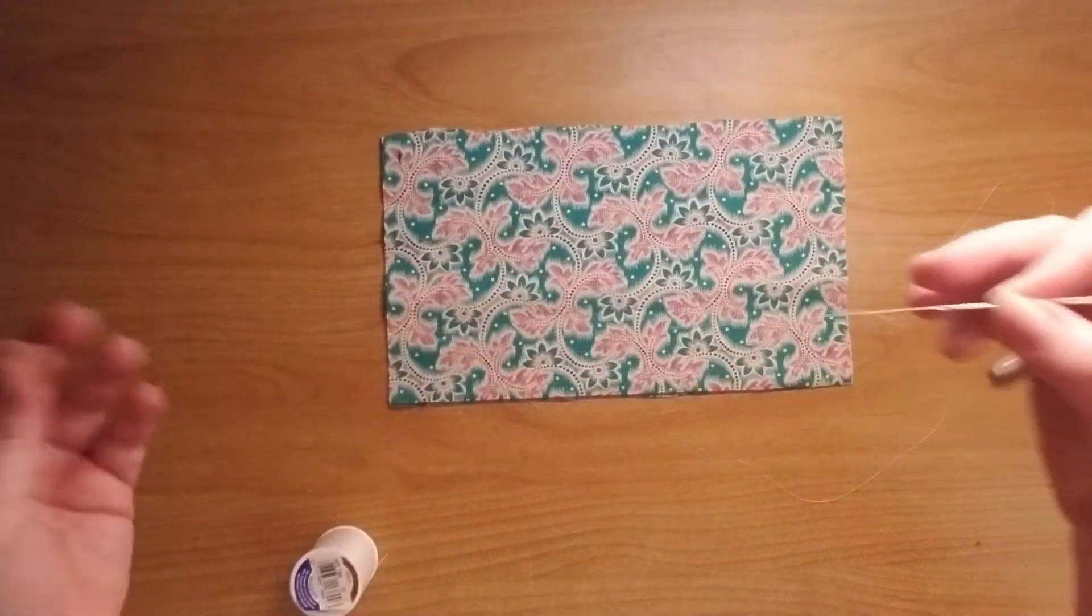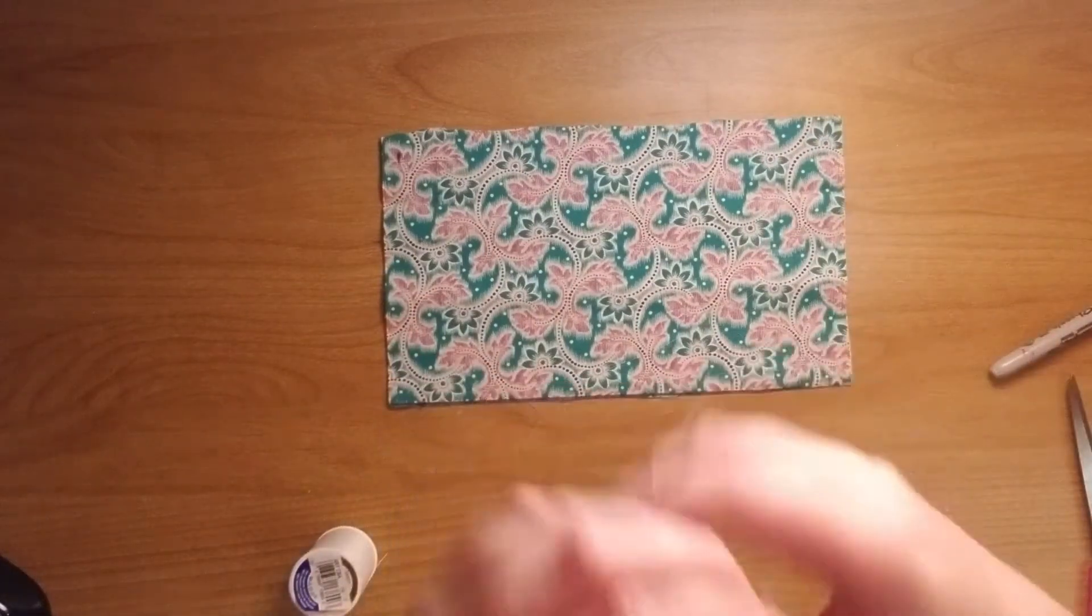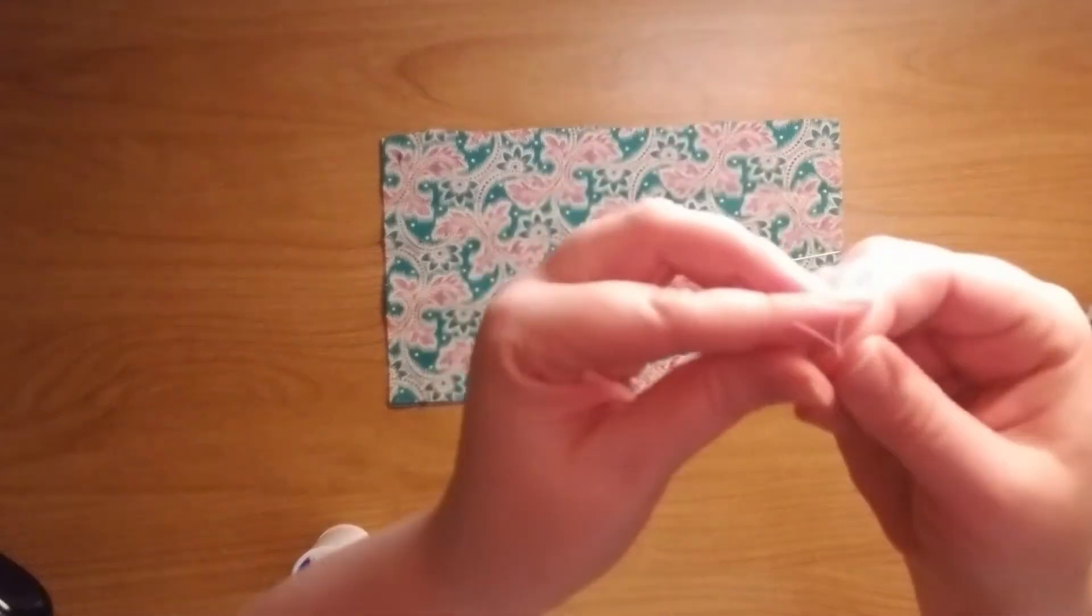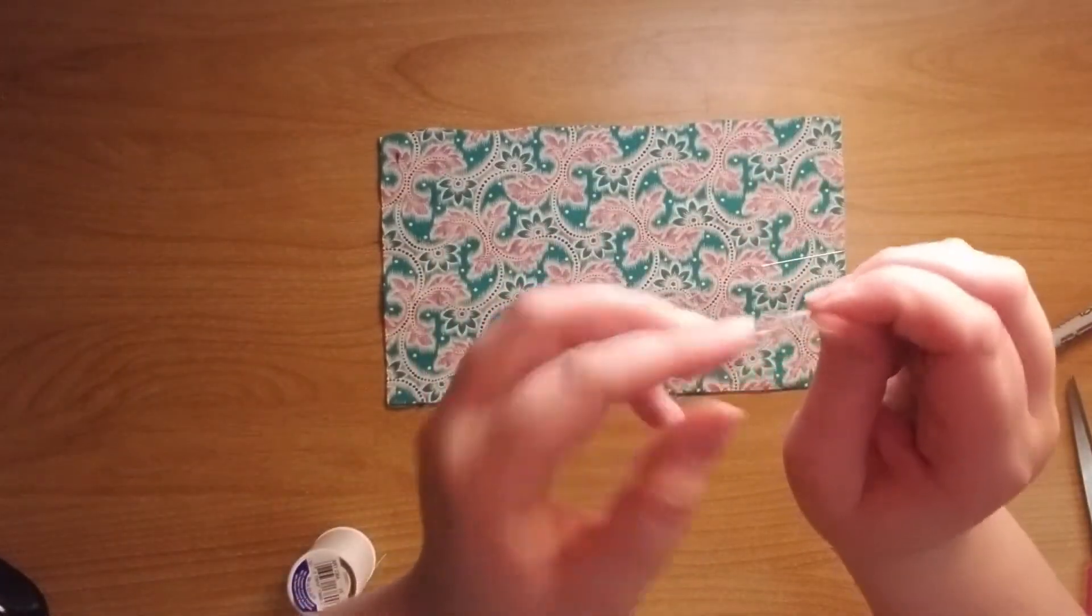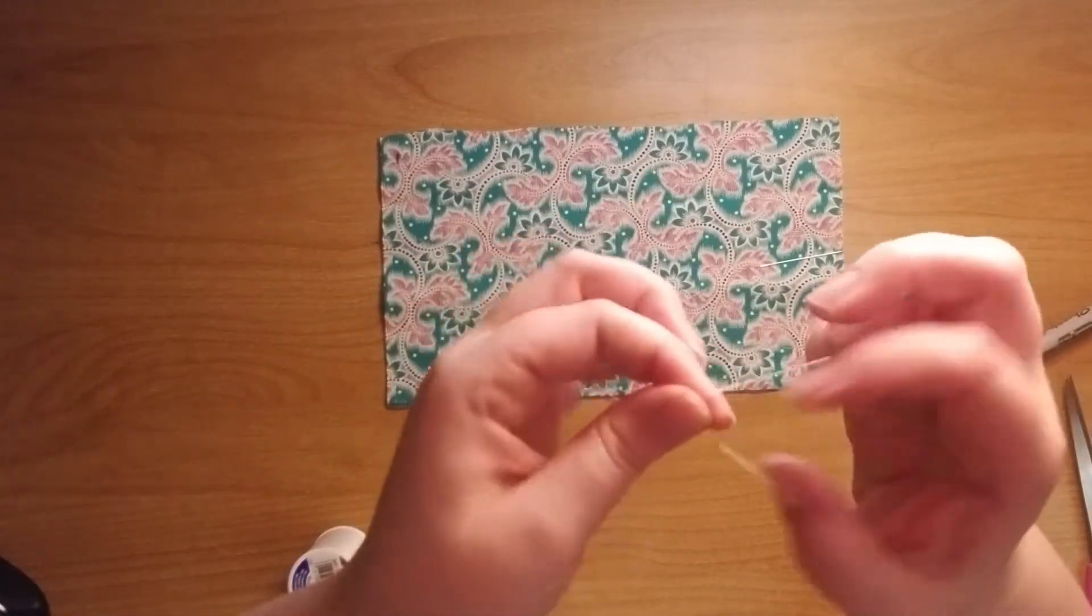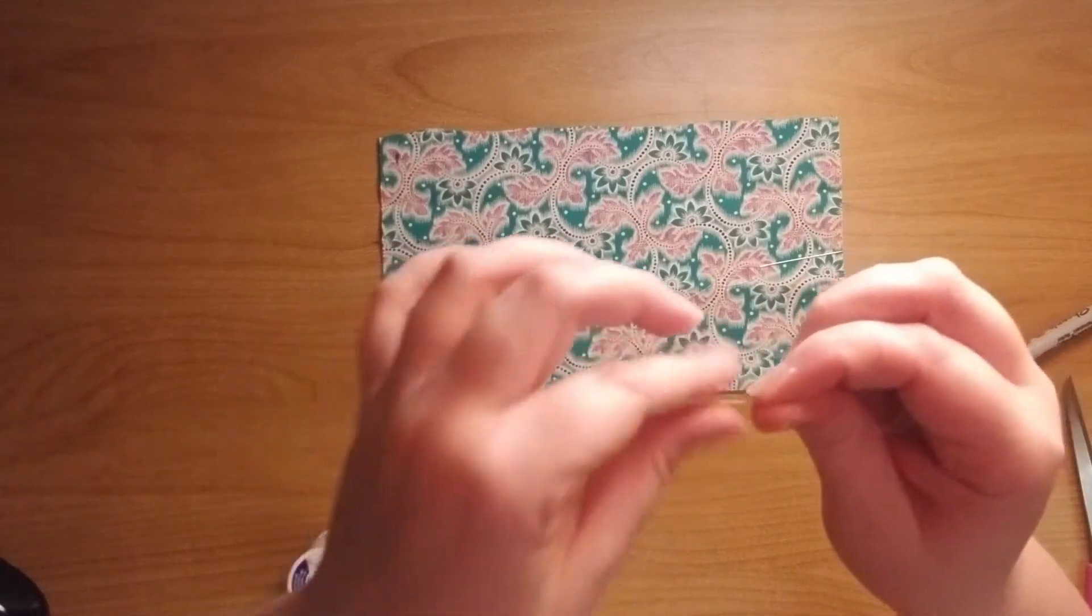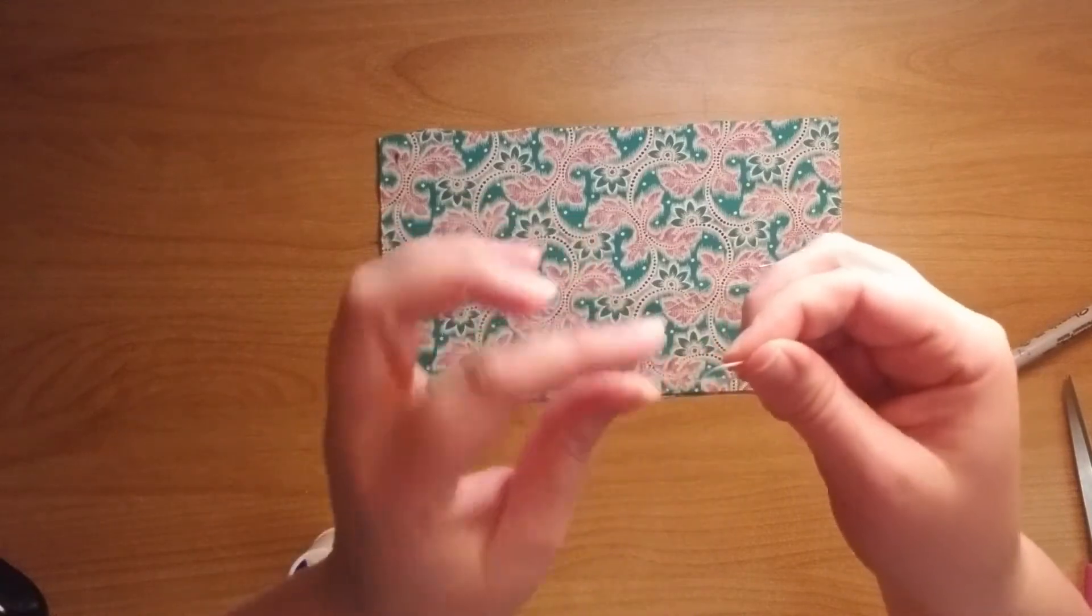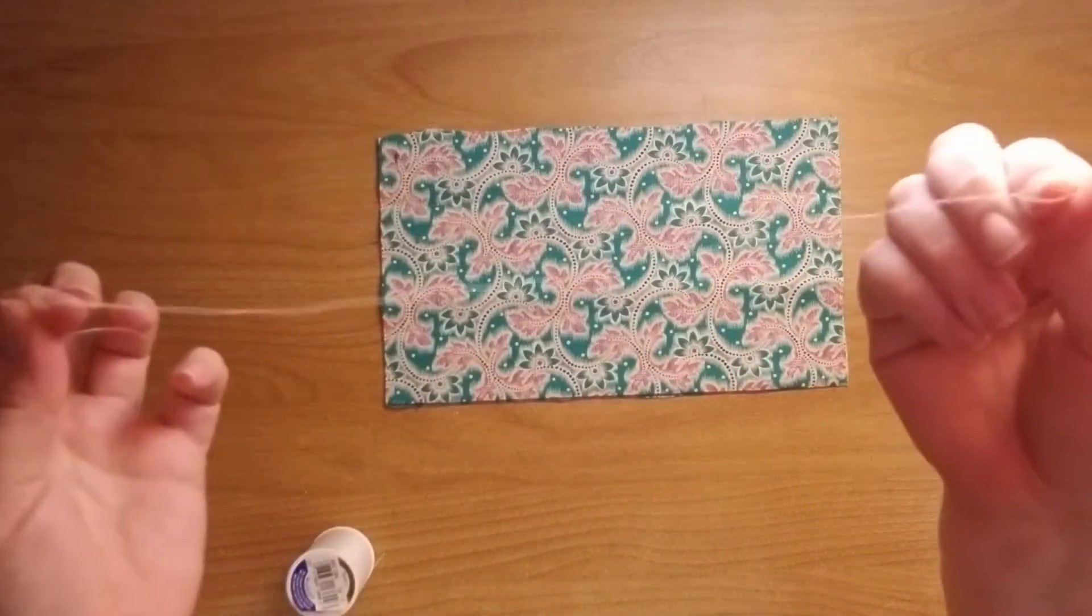Next you're going to thread your needle and you're going to pull all the way through so that the needle is at the halfway point. And then, to make sure that you don't lose your needle, you're going to tie a nice overhand knot at the end of your string. I'm going to do it two or three times so I have a nice big knot there. So now I'm not going to lose my needle.